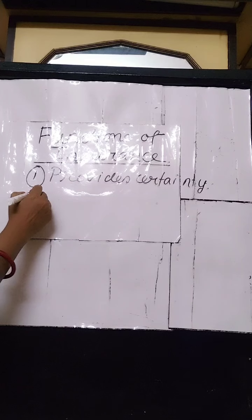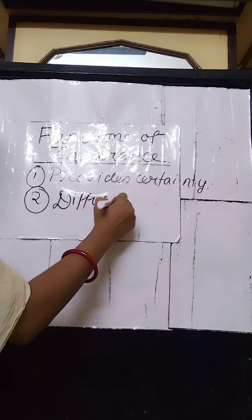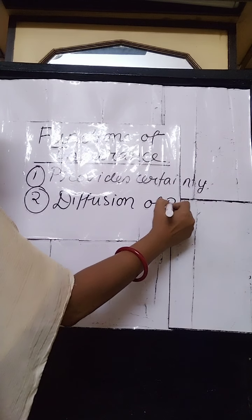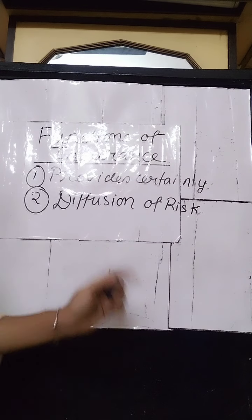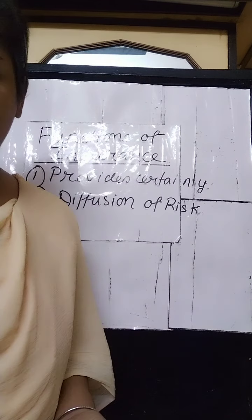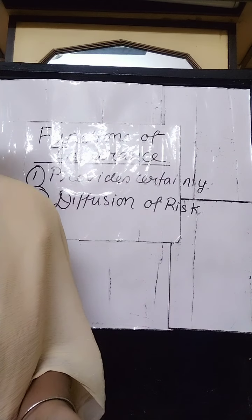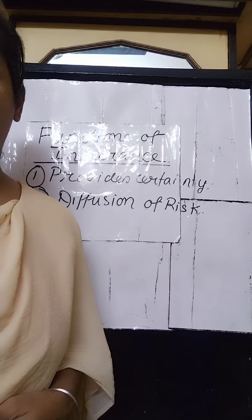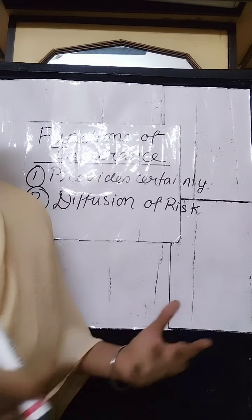The second function is diffusion of risk. The burden of risk or loss is distributed among a large number of persons who are called the insured. When the insured suffers a loss, the insurance pays compensation to the insured person among other persons who are exposed to a similar kind of risk, and insurance is paid against such risk.